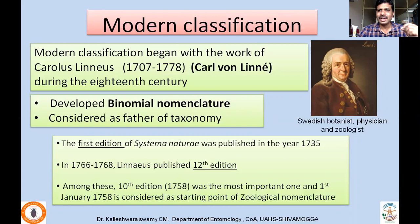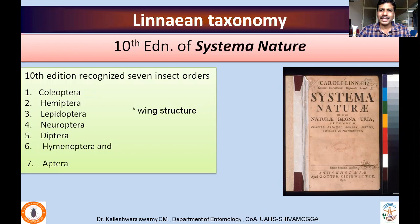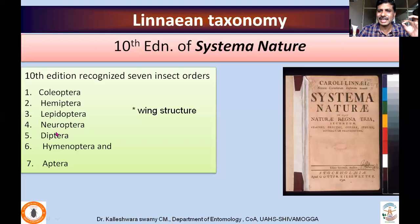In the 10th edition of Systema Naturae, Linnaeus recognized seven insect orders: Coleoptera, Hemiptera, Lepidoptera, Neuroptera, Diptera, Hymenoptera and Aptera. He used wing structure for classifying these insects. Based on the single character of wing structure, he classified the insects he encountered into seven different orders.